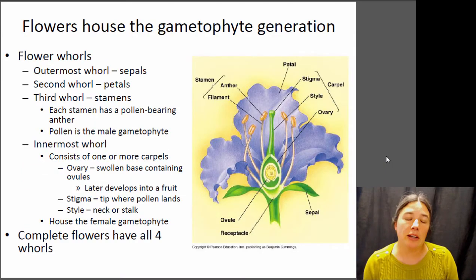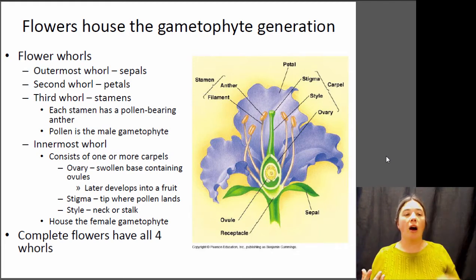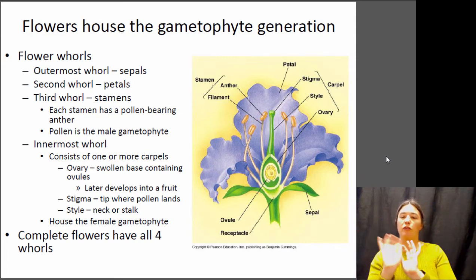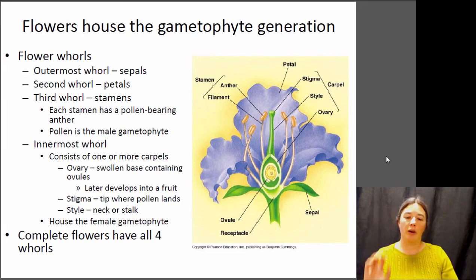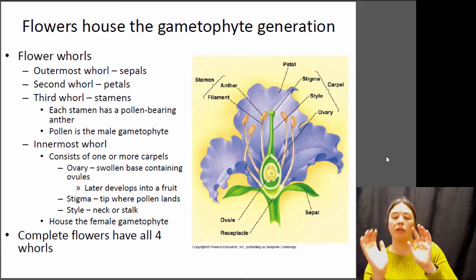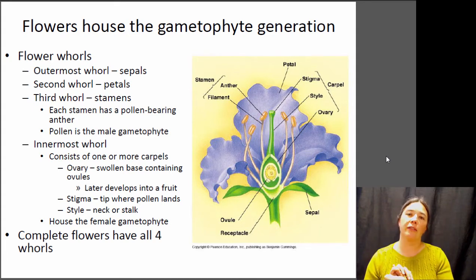In the angiosperms, the flower does house the gametophyte generation. Flowers all have a similar general structure, and you can divide the flower into what we call different whorls. These whorls are basically like circles of similar structures contained within each other. The outermost whorl of the flower is called the sepals — those little leaf-like structures. If you have a rosebud, you'll notice there are some little leaf-like structures encasing the bud; those are the sepals.